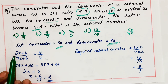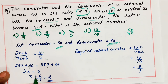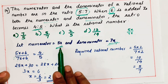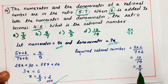Cross multiply: 5 into 5x plus 5 into 6, that is 25x plus 30, equals 4 into 7x plus 4 into 6, which is 28x plus 24. Moving terms: 25x minus 28x equals 24 minus 30, so 3x equals 6, and x equals 6 by 3, that is x equals 2. If x is equal to 2, then 5x is 5 into 2 and 7x is 7 into 2, giving the required number as 10 by 14.